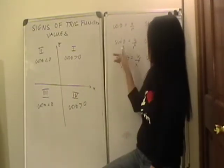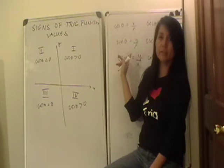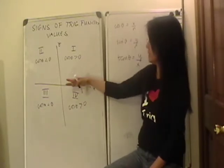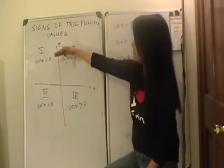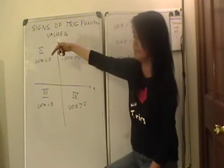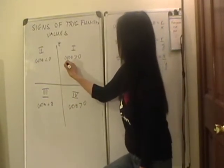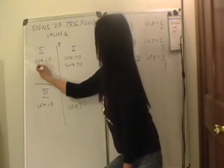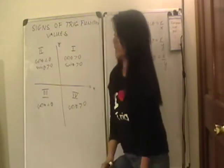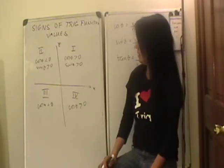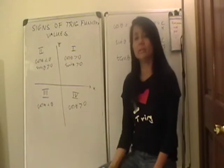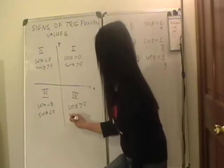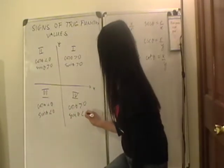We do the same exercise for sine of theta. Sine of theta is the y-coordinate over r. r is always positive, so now it's just the y. Above the x-axis, the y-coordinate is always going to be positive. So in the first quadrant, sine theta is positive. Likewise, sine theta is positive in the second quadrant. Below the x-axis, all the y-coordinates are negative, so sine theta is negative in the third and the fourth.